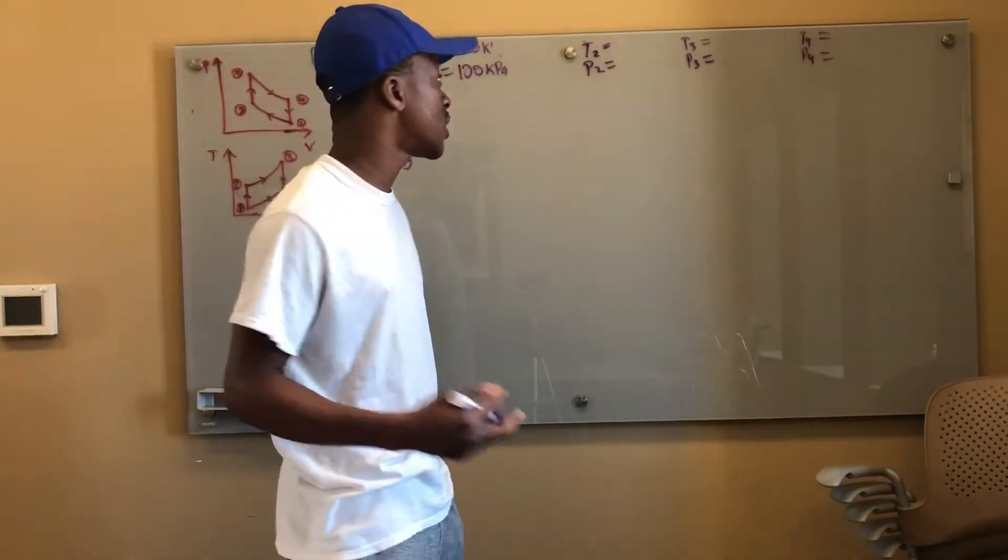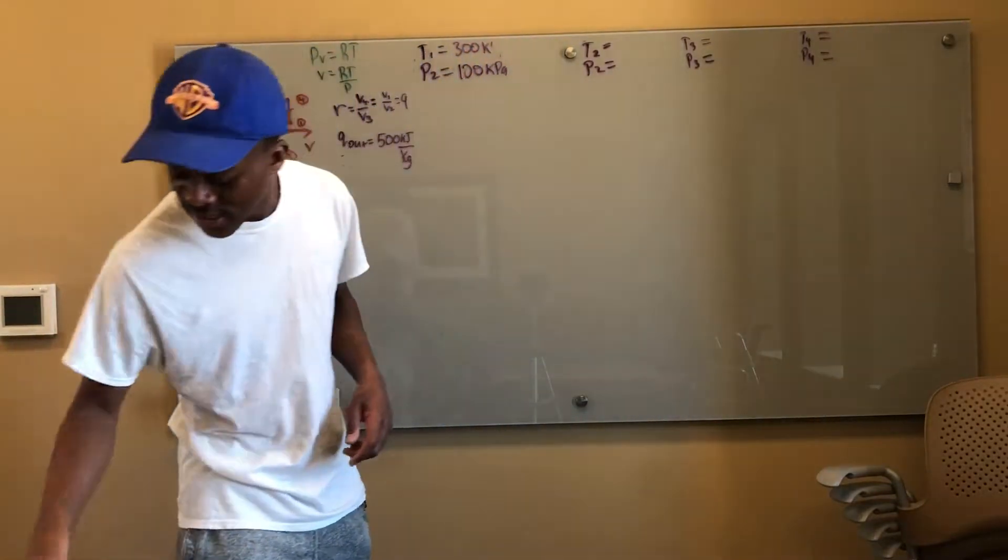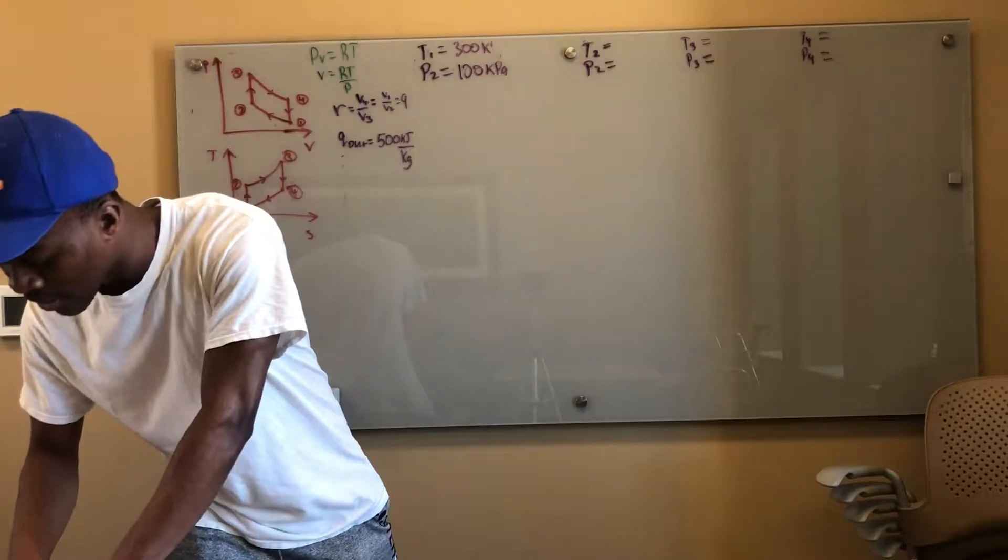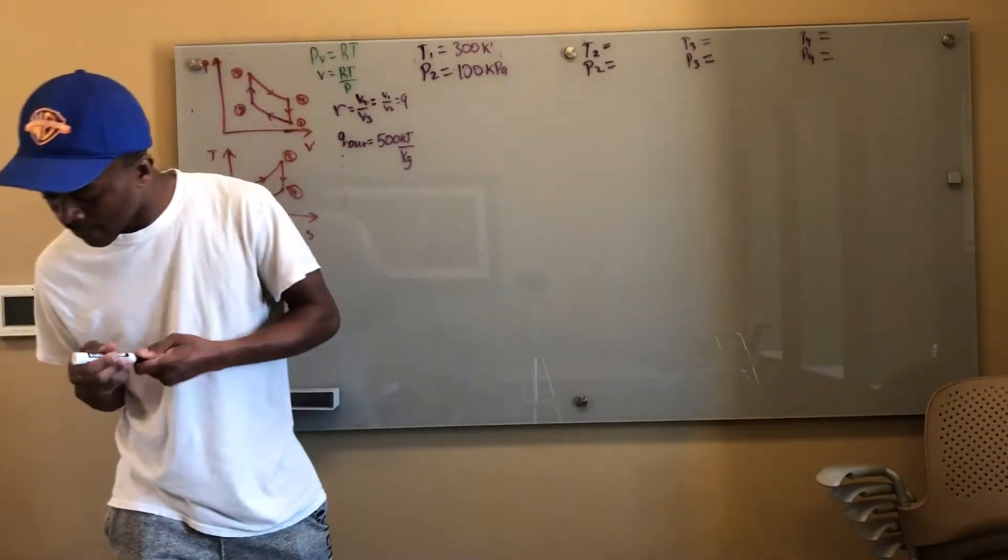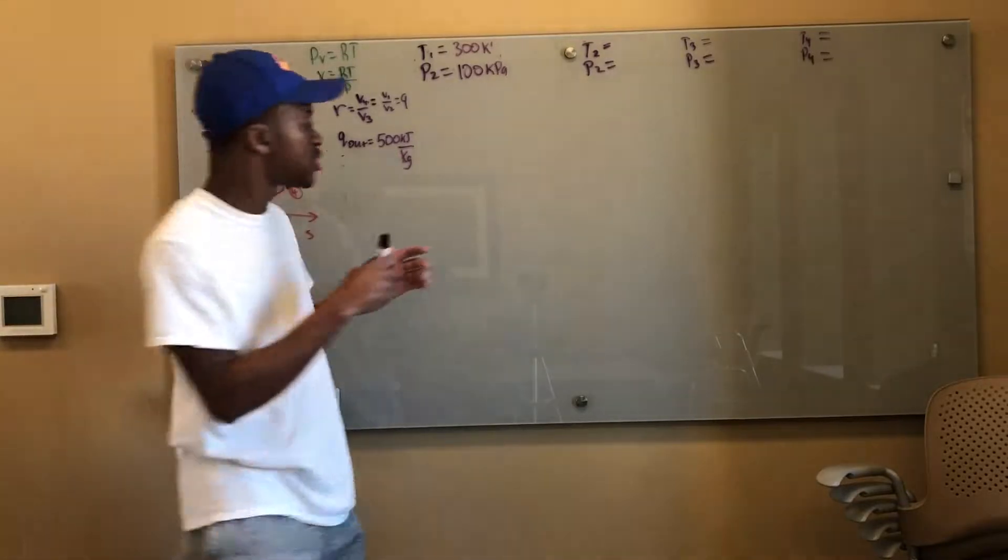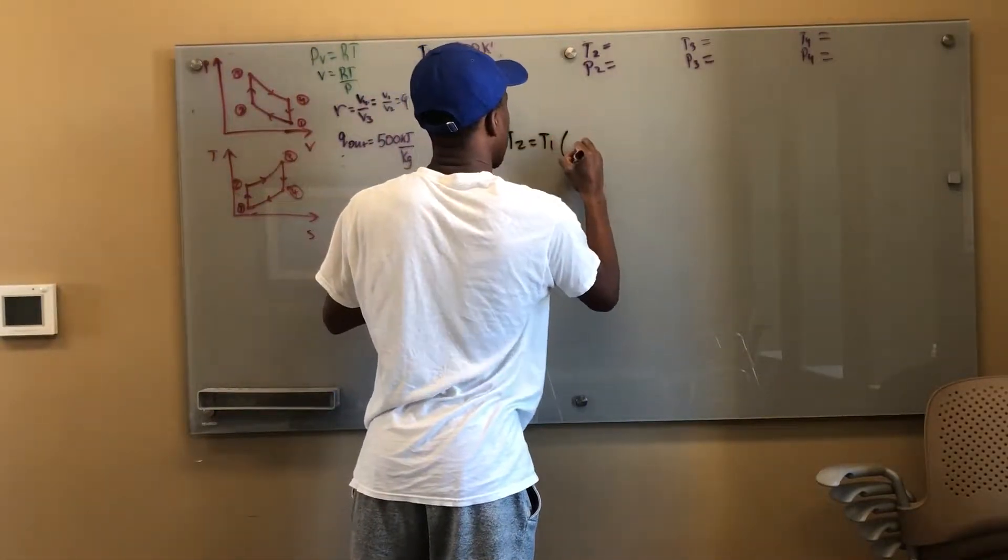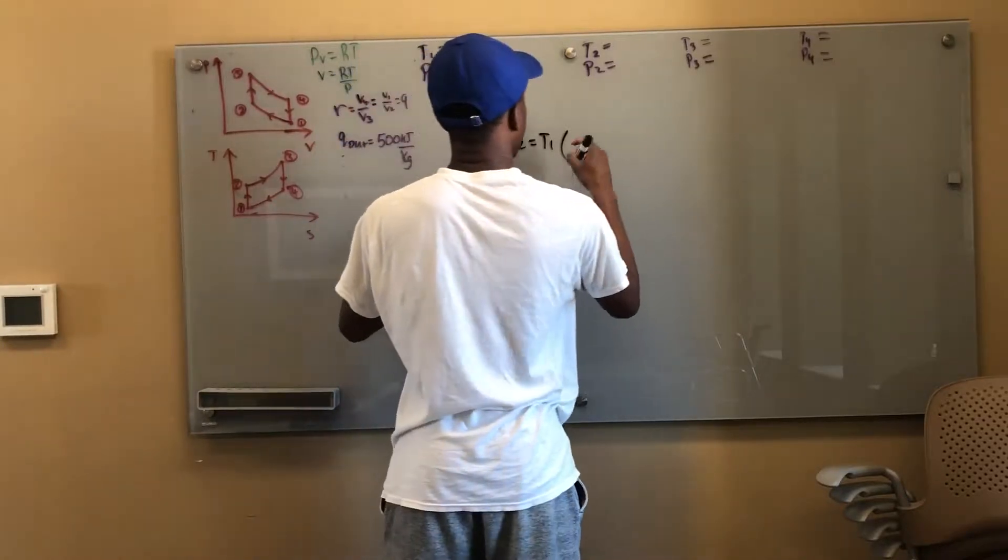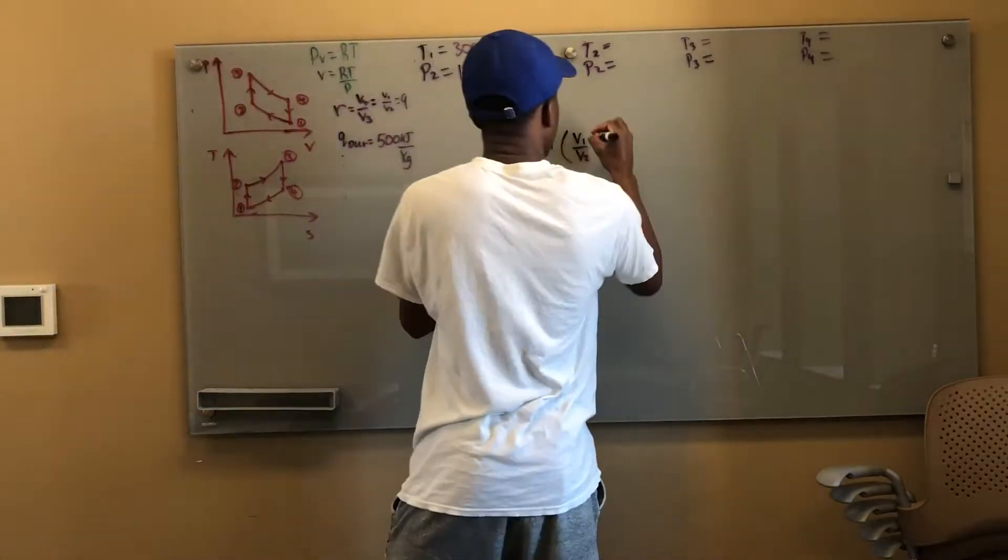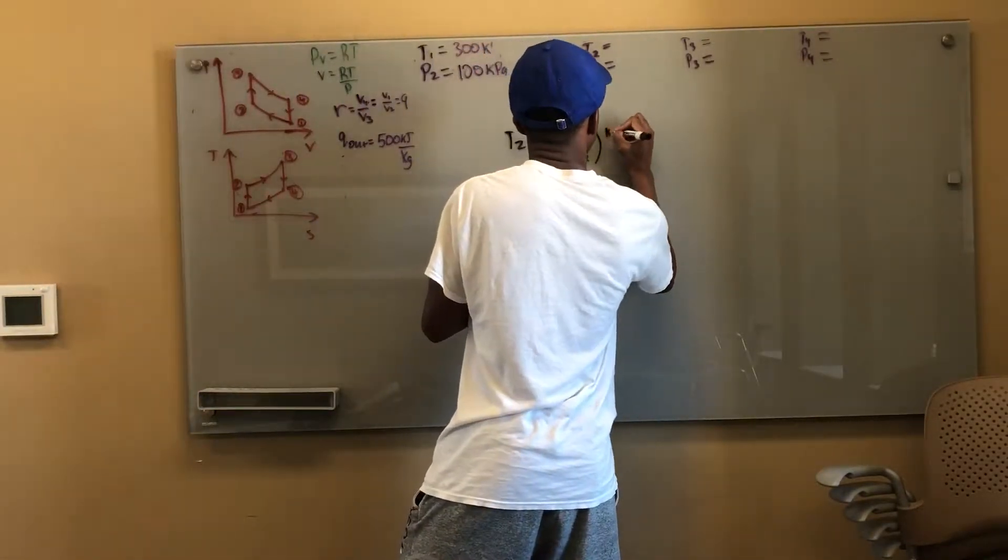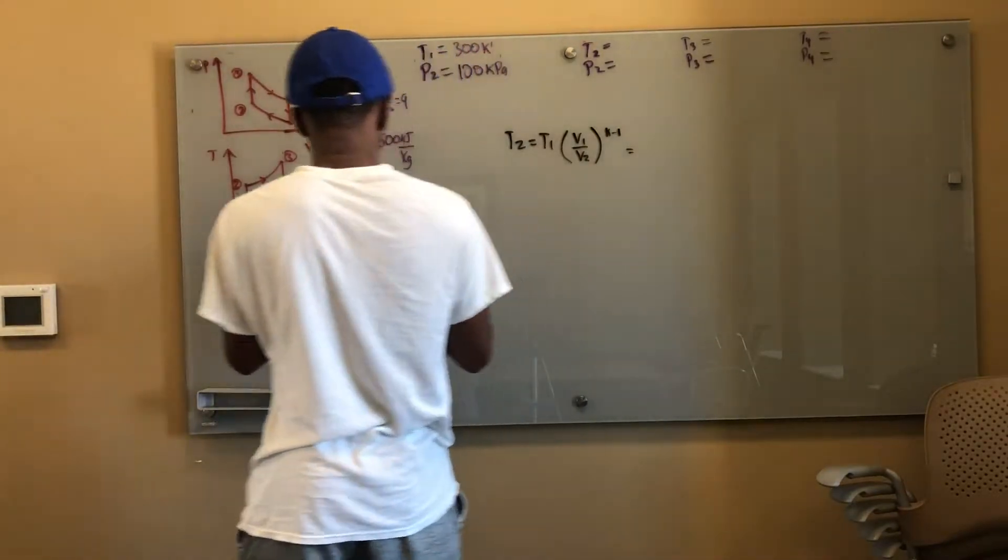Okay cool. Now they asked for the temperature at the end of the compression process that's T2. I can go ahead and immediately solve for that. T2 is simply using those isentropic equations that we have. We can go ahead and say that T2 is equal to T1 times V1 over V2 to the k minus 1.